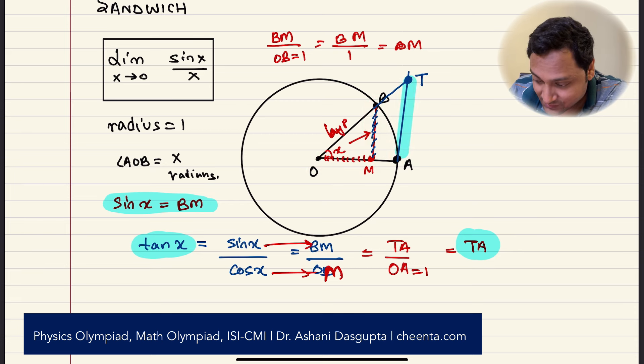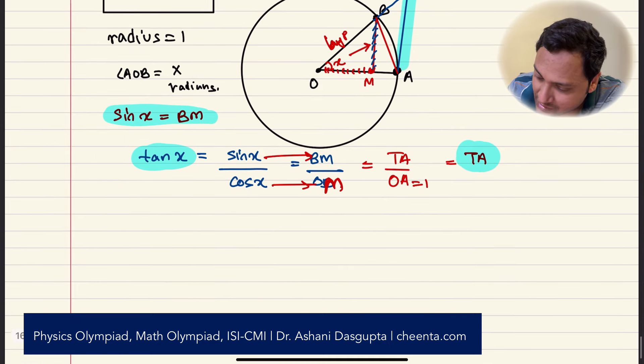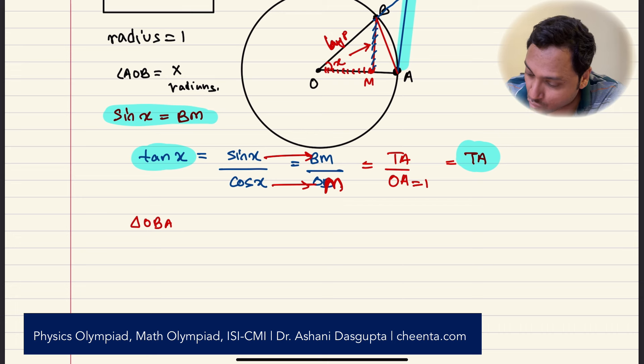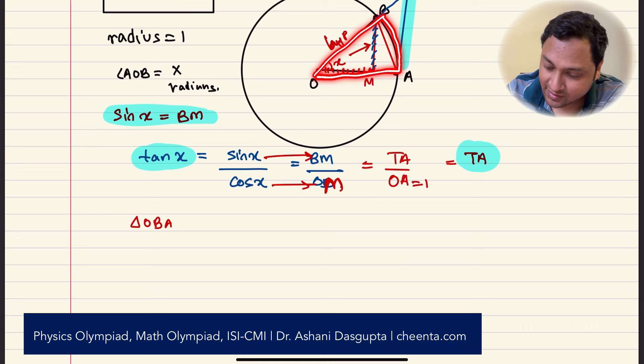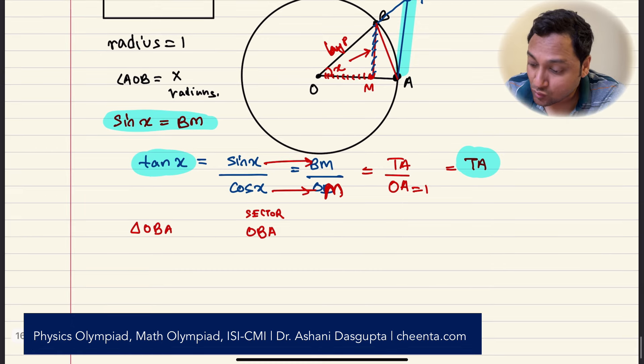So now that we have this, let's go ahead and produce an inequality. What inequality? Well, let's join AB. And we have three pieces of area. Let's see what we have. So we have triangle OBA. This is OBA, this triangle. We have the sector OBA. This is sector OBA. And we have the triangle OTA.